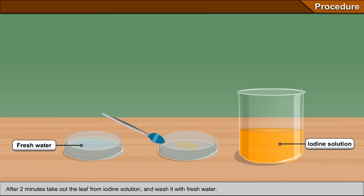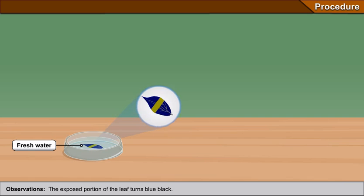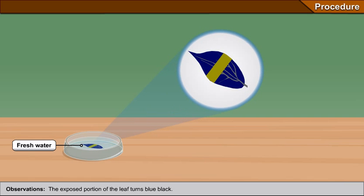The exposed portion of the leaf turns blue black. The covered portion of the leaf turns yellowish brown.